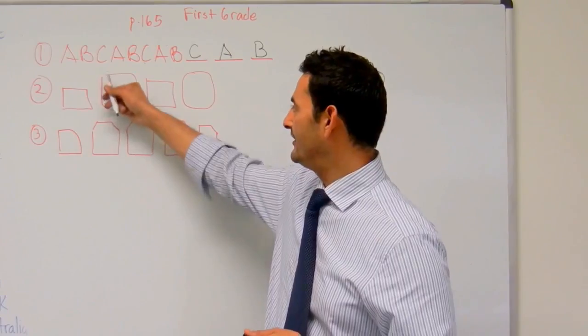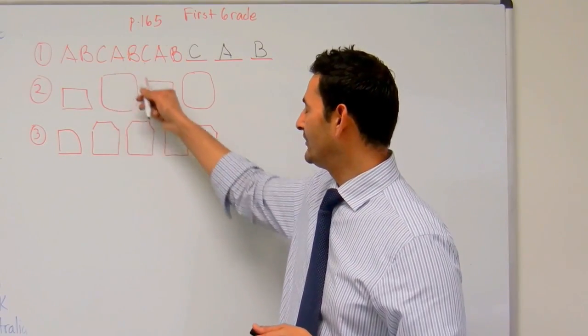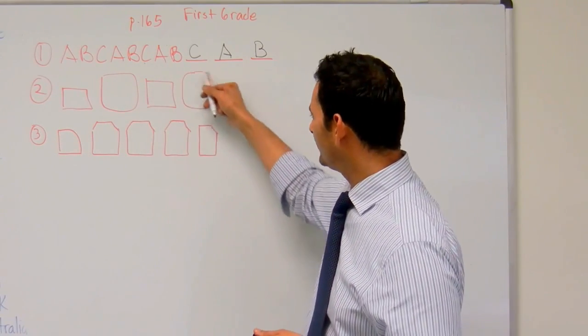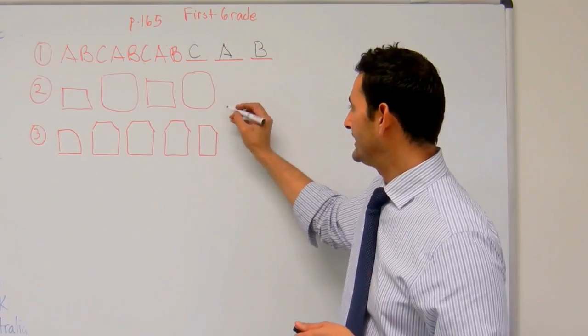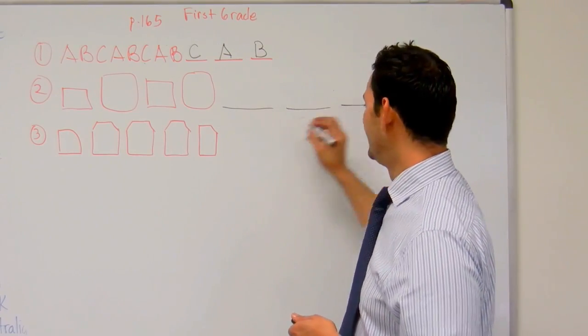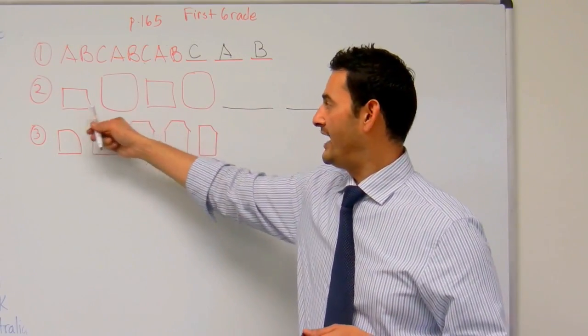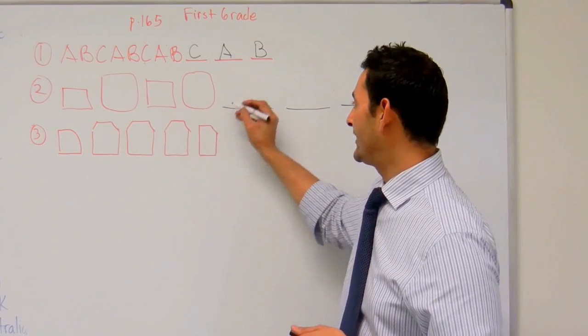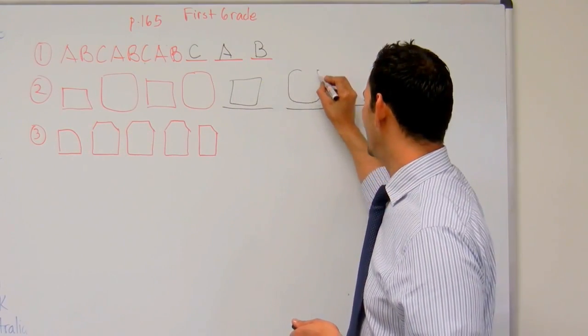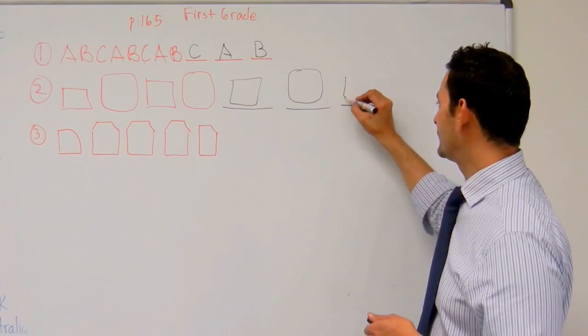So here we have a square, kind of like a quadrilateral there, another square, a quadrilateral there. So let's fill in the next three. So what's going to be next? We have square, quadrilateral, square, quadrilateral, square, kind of like a quadrilateral, and then another square.